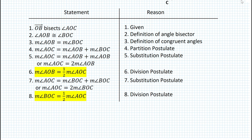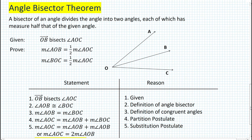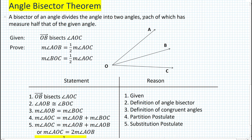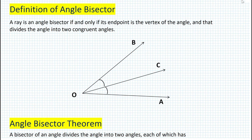We've just proven the theorem regarding the angle bisector — namely, that a bisector of an angle divides the angle into two angles, each of which has measure half of the given angle. We don't need to prove this again because we just did it here. In the future, you can use this theorem for other applications in statement-reason tables. That's basically it for today's lesson. If you have any questions, please type them in the YouTube comments section. Otherwise, have a fantastic day.